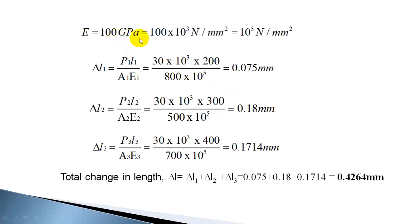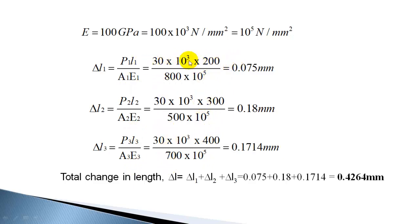Young's modulus is given as 100 GPa. Converting: 100 × 10³ MPa = 10⁵ N/mm². Now for the elongation of the first section: the load in all three sections is P = 30 × 10³ N, and Young's modulus E = 10⁵ N/mm² is the same for all sections. Length L1 = 200 mm and A1 = 800 mm². Substituting into δL = PL/AE, you get δL1 = 0.075 mm.